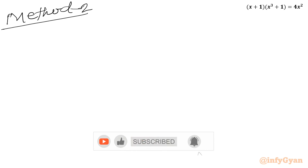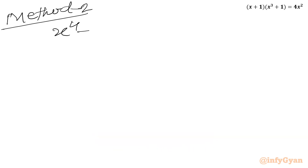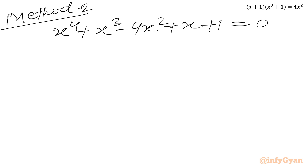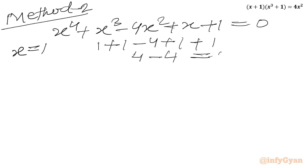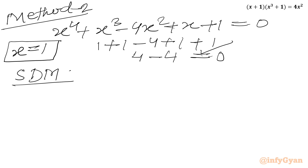Now I will write method number 2. The quartic equation is x⁴ + x³ - 4x² + x + 1 = 0. If I plug in x = 1: 1 + 1 - 4 + 1 + 1 = 4 - 4 = 0, which is true. So x = 1 is a root. We can use the synthetic division method, writing all the coefficients of the quartic equation.